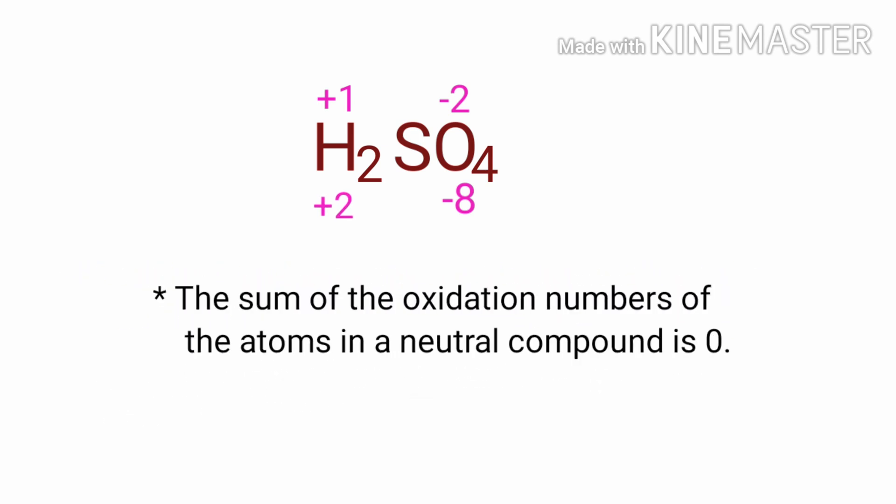As per the rule of assigning oxidation numbers, the sum of the oxidation numbers of the atoms in a neutral compound is equal to 0. So the number under sulfur must be plus 6.